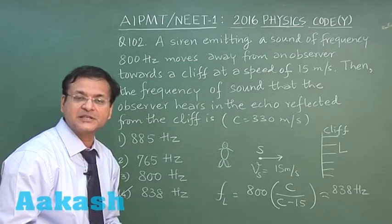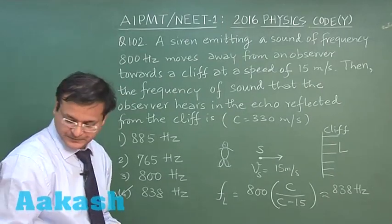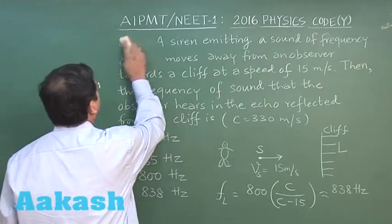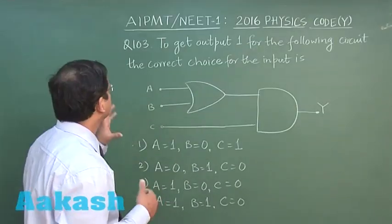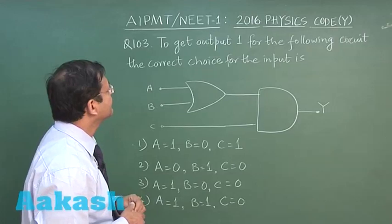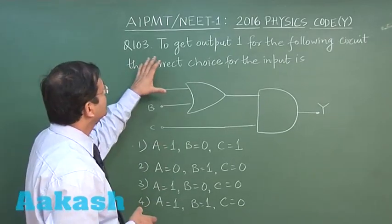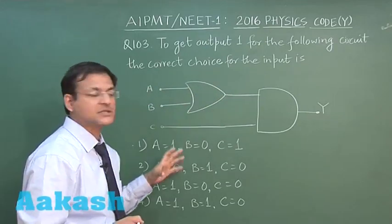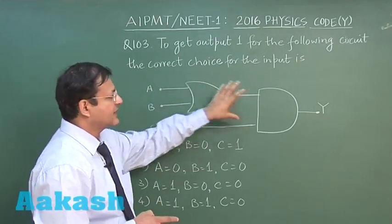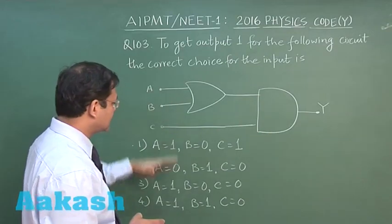Now let us look at next question, that is question 103. In this next question, that is question 103, which is based on logic gates, it says that to get output 1 for the following circuit, the correct choice for the input is. Here you have an OR gate and this is an AND gate, and the choices are as follows.